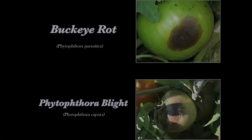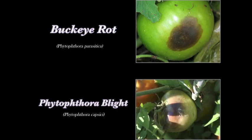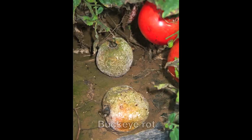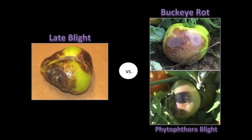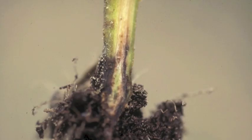Buckeye rot and phytophthora blight are caused by pathogens that are related to the one causing late blight. Fruit symptoms are very similar, but in both cases infected fruit are most likely to be found close to the ground. Buckeye rot occurs only on fruit, but phytophthora blight can cause a brown lesion on the stem close to ground level. This infection may cause the plants to wilt and eventually die.